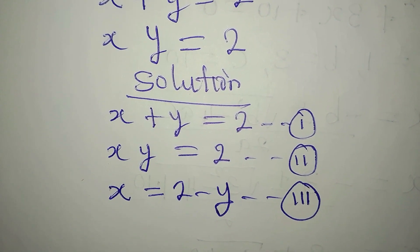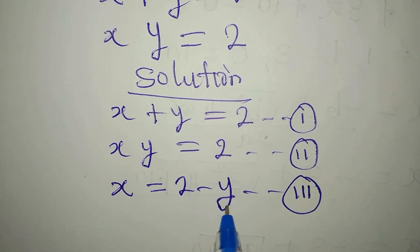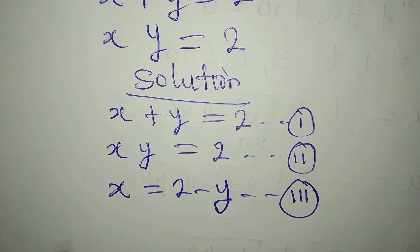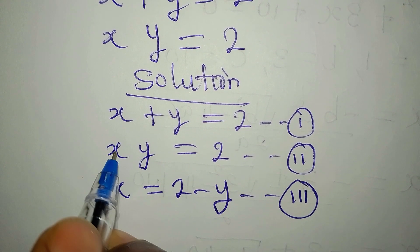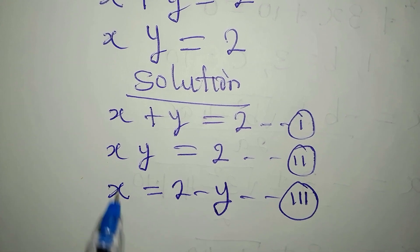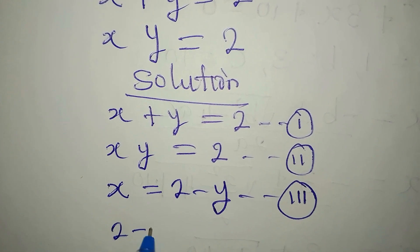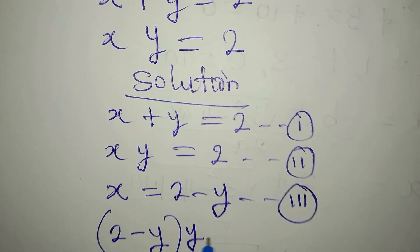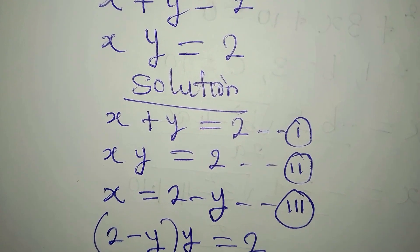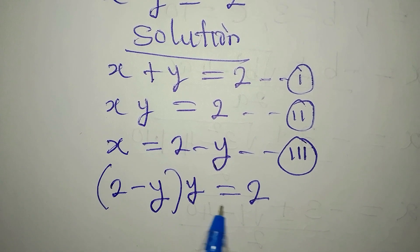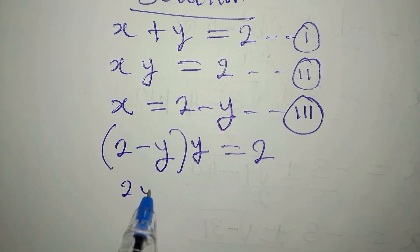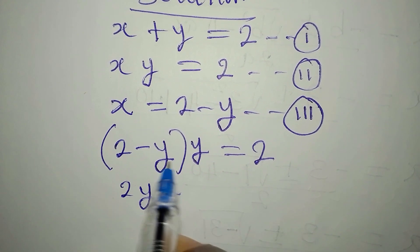We are going to need equation 3 when we get the value of y. Now put equation 3 into equation 2, so in place of x I'm going to write 2 minus y. Then this y outside will appear: (2 minus y) times y equals 2. We simplify to get 2y minus y squared equals 2.